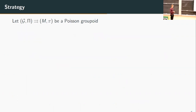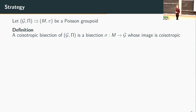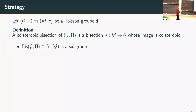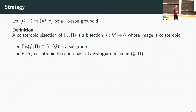Now in the Poisson world, instead of a groupoid we have a Poisson groupoid, and we have the notion of a coisotropic bisection. A coisotropic bisection is a bisection whose image is coisotropic in G, which is a Poisson manifold. In this nice setting, every coisotropic bisection has a Lagrangian image, which is important for the linearization part — you can only hope to linearize when it's Lagrangian.